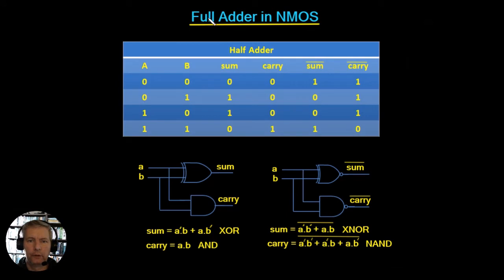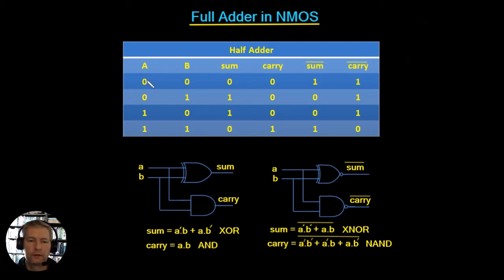In this video we're going to build up a full adder in NMOS. We're going to start off with the half adder. I've got the truth table here for the half adder. If we have two inputs A and B, then we're going to have the options of 0,0 then 0,1 then 1,0 and 1,1. So those are our four options for our inputs.